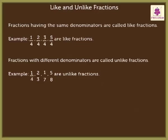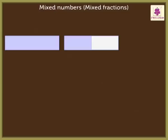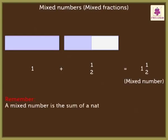Now, let us look at the third type, which is mixed numbers, also called mixed fractions. Annie has two grids. She has coloured the first grid completely and half of the second grid. When added together, we get one and a half. This represents a mixed number. Thus, a mixed number is the sum of a natural number and a proper fraction.